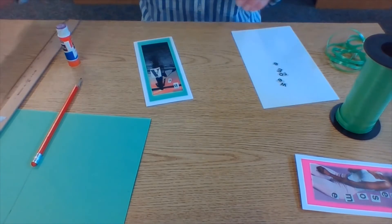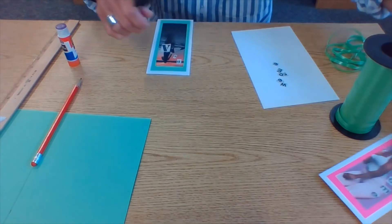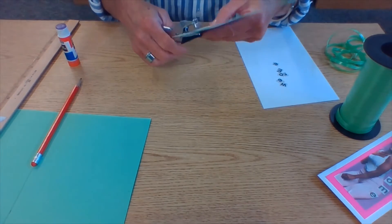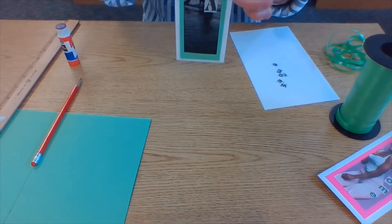The last step is to put the little tassel on here and I just used some curling ribbon. You could use yarn. You could use string or twine. Anything that you happen to have handy. I punched a little hole.